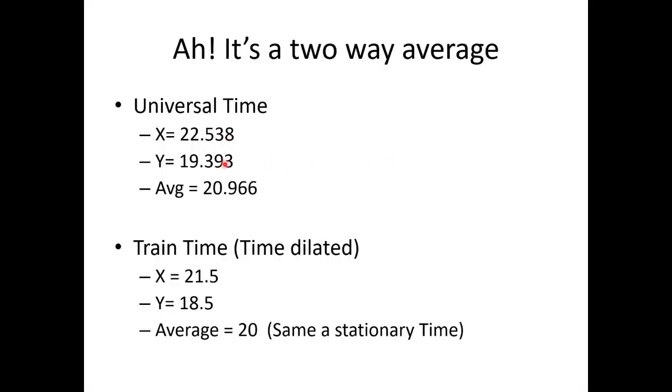If we add up the universal time and take the average, there's going to be a mismatch. But now we take the time dilated train time and add the X launched time and the Y launched time, the average is 20. This is how we match the stationary time.